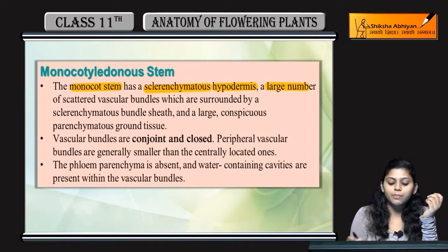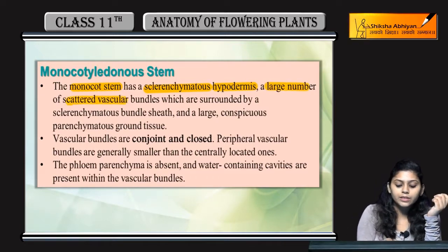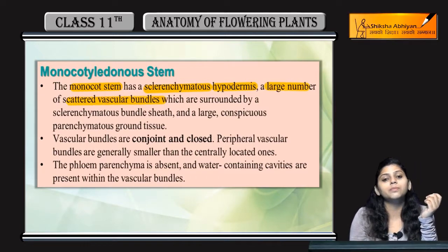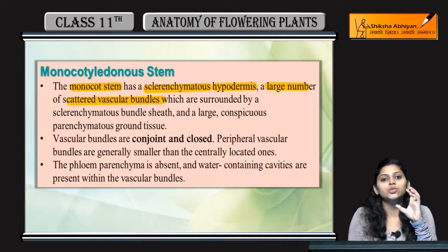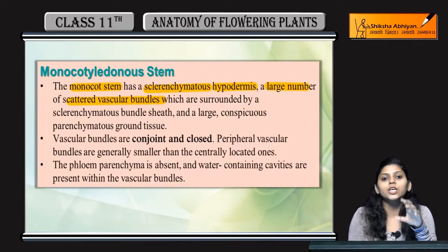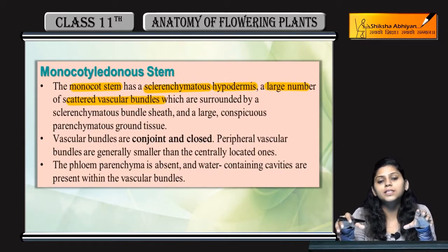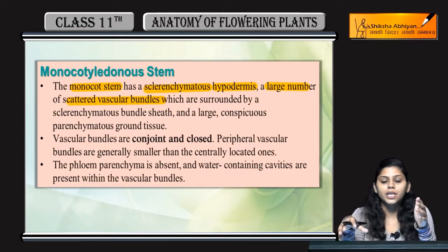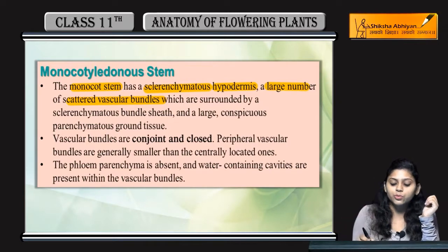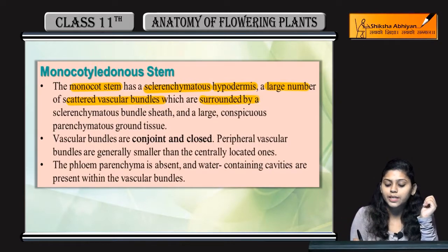A large number of scattered vascular bundles are present. The vascular bundles — meaning xylem and phloem — are scattered. Where are they scattered? They are scattered in the ground tissues.